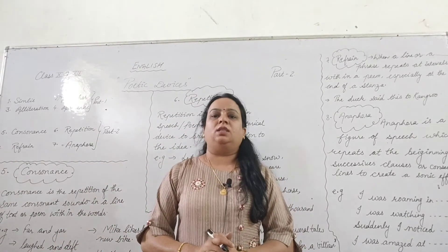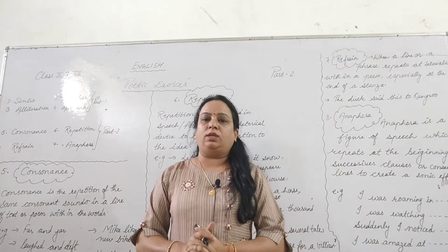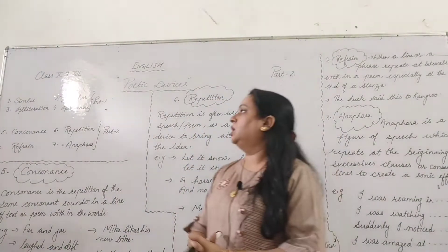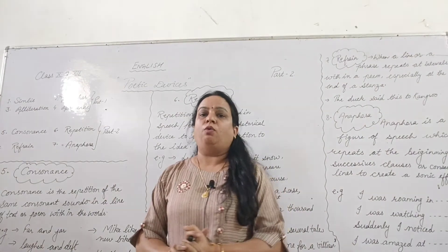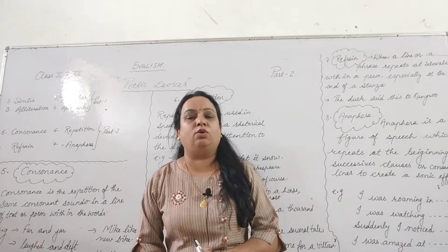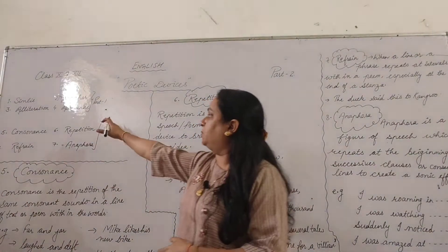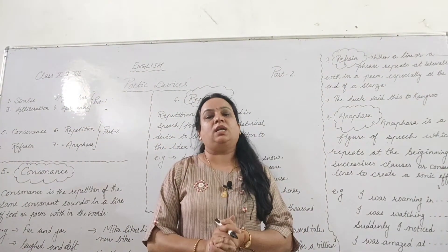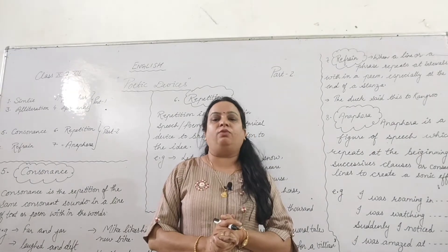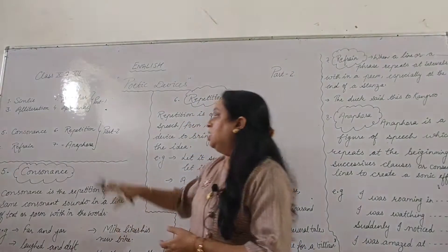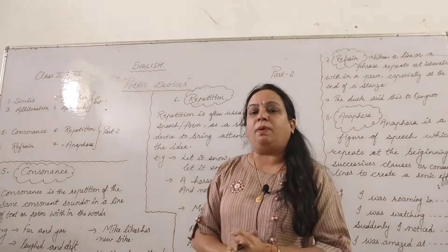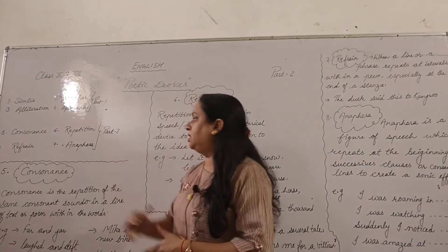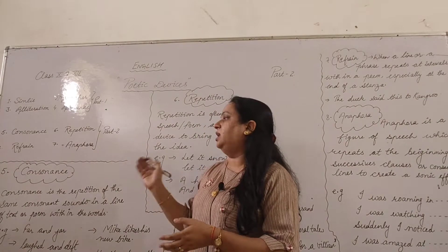Hello dear students, I welcome you once again in part number 2 of Poetic Devices. In our previous video, we discussed the first 4 poetic devices: simile, metaphor, alliteration, and resonance. I request you to watch that video if you have not seen it. In this part number 2, we will cover consonance, repetition, refrain, and anaphora.